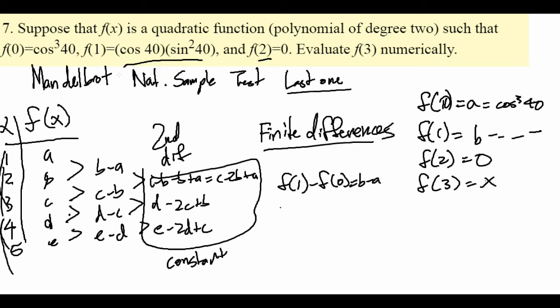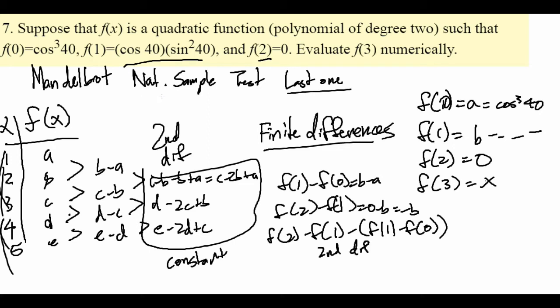Because that's the thing we want to find. So f of 1 minus f of 0 equals b minus a. And f of 2 minus f of 1 equals 0 minus b equals negative b. And then the second difference. This is just negative b minus b plus a, which is a minus 2b.